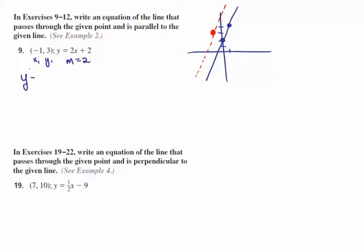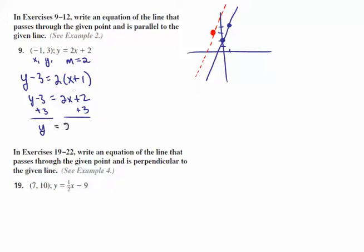Using point-slope form with point (negative 1, 3) and slope 2: Y minus 3 equals 2 times (X plus 1). Distributing gives Y minus 3 equals 2X plus 2. Adding 3 to both sides, we get Y equals 2X plus 5. From the graph, the line crosses the Y-axis around 5, which makes sense.